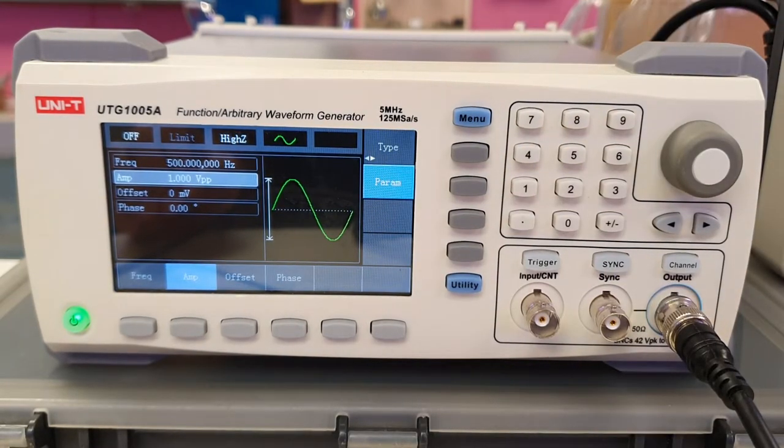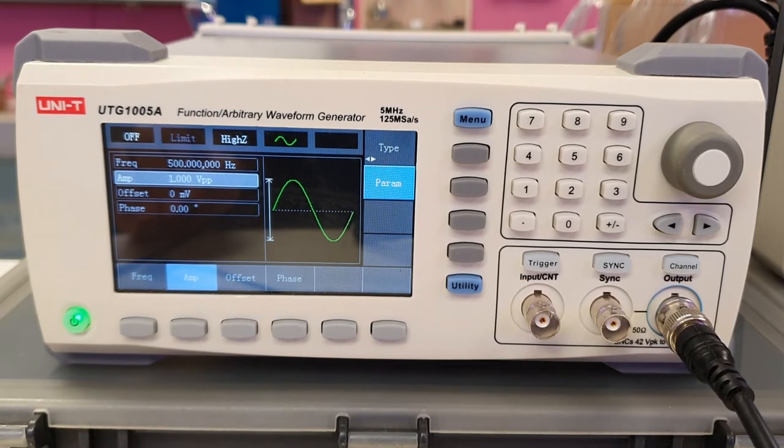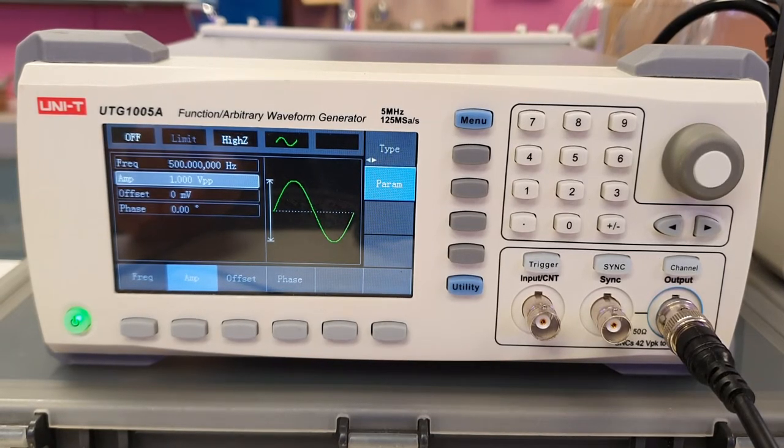To set the frequency and amplitude parameters of the sine wave to 1 kHz and 2V peak-to-peak, enter the required numerical value using the number keys and select the unit using the corresponding softkey.